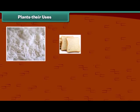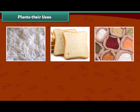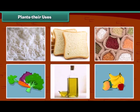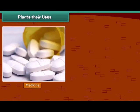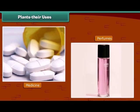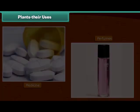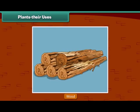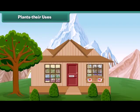Kids, as we know, we get our food items from plants. Besides food items, we also get many other things from plants. Many medicines and perfumes are made from plants. Plants also give us wood. In some places, houses are made up of wood.